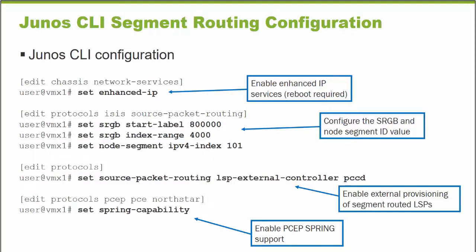Under edit protocols ISIS source packet routing, you do 'set SRGB' and configure a start label. This will be the range of labels available to assign to your nodes for node SIDs. In this example, I'm going to use 800,000 — you can go up to about a million. And then how many labels do you need? You don't specify an end range, you specify an index range. So 'set SRGB index range 4,000' will give me a segment routing global block of labels from 800,000 to 803,999 — about 4,000 labels.